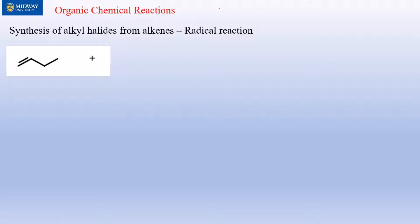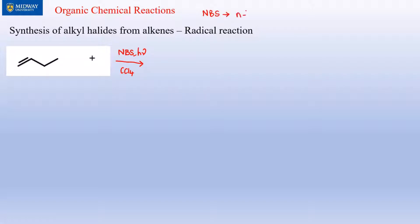When an alkene reacts with a halogen it's not very selective. To make it very selective we cannot just use Br₂, Cl₂, F₂, or I₂. We have to use a specific reagent called NBS in the presence of light and carbon tetrachloride.